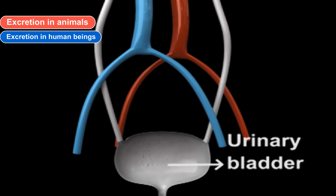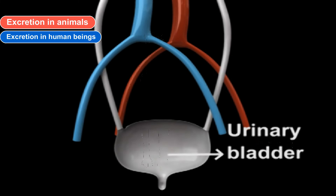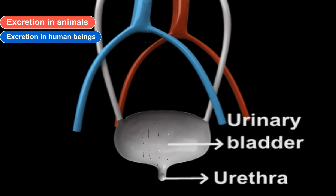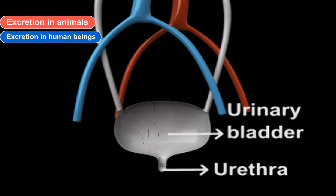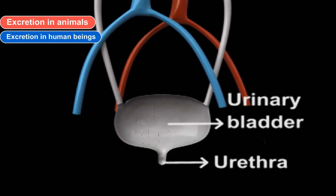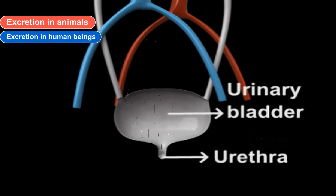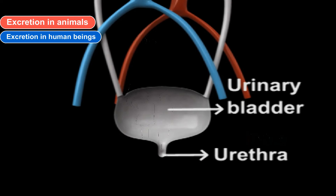As blood transports the wastes to the kidneys, it consists of both useful and harmful substances. The useful substances must be absorbed back into the body, and the harmful substances should be removed from the body.